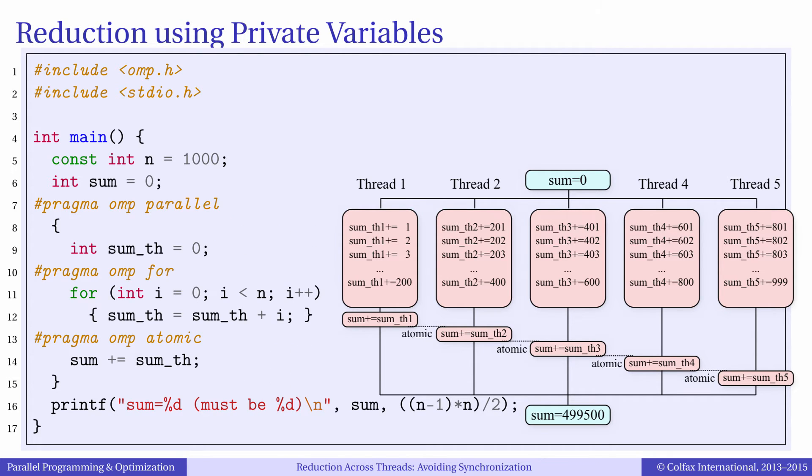In the previous episode our implementation used the atomic mutex inside the loop so we performed n atomic operations where n is 1000.